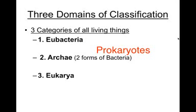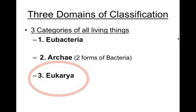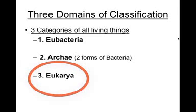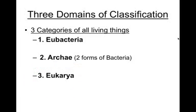However, genetically speaking, the archibacteria show more similarity to the eukarya. These are a diverse group of more complex organisms whose cells do have a membrane-bound nucleus and other complex structures. This group includes animals, plants, fungi, and single-celled protists.